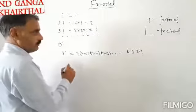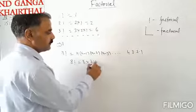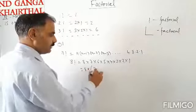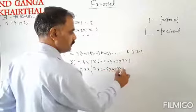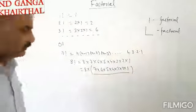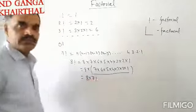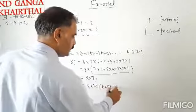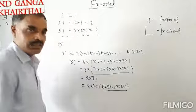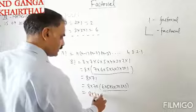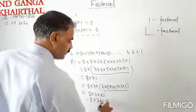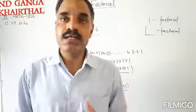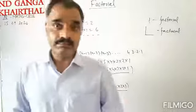We already found that 8 factorial equals 8 into 7 into 6 into 5 into 4 into 3 into 2 into 1. Now, 7 into 6 into 5 into 4 into 3 into 2 into 1 can be written as 7 factorial. So 8 factorial can be written as 8 into 7 factorial. Again, this can be written as 8 into 7 into 6 factorial, or as 8 into 7 into 6 into 5 factorial.